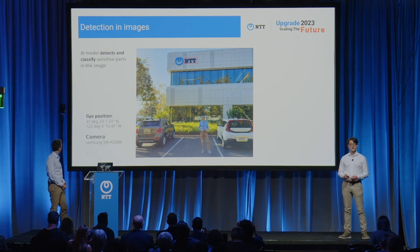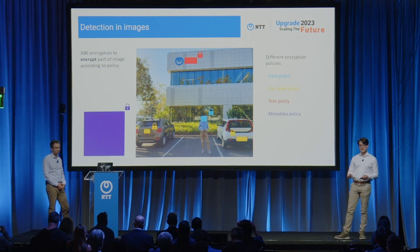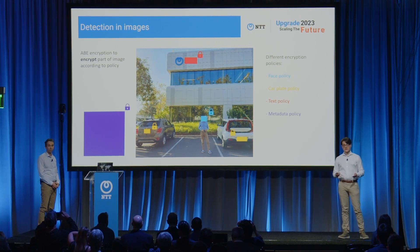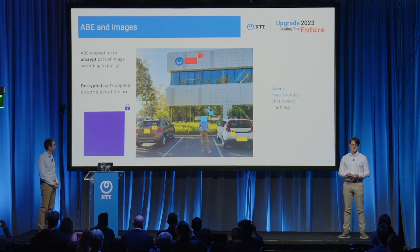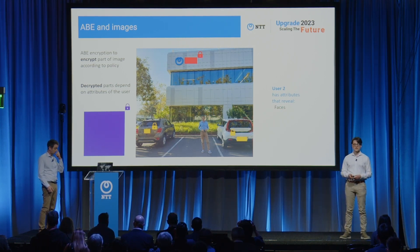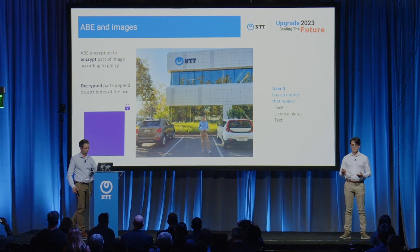To do that, we can train an AI model to detect and classify the different areas in the image, and then use attribute-based encryption to encrypt each area using a different policy depending on its content. So the faces will be encrypted differently than the license plates, for example. Once we have our encrypted image and want to decrypt it, a first user could have attributes that let him reveal nothing — only the anonymized image. A second one could see only the faces. A third one could see everything except the faces. And a fourth user could see all the information in the image, but not the metadata.